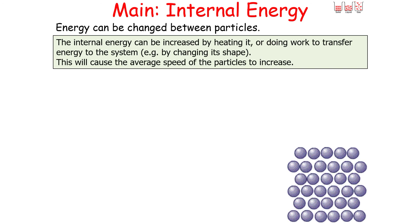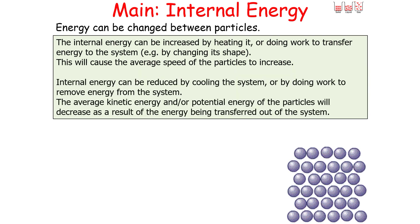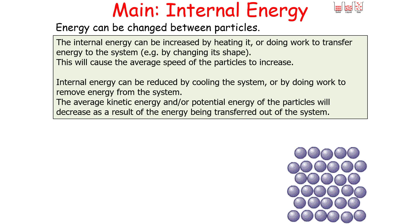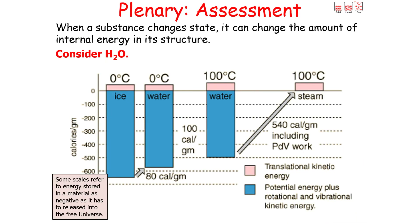Internal energy can also be reduced by cooling the system or by doing work to remove energy from it, causing the average kinetic and/or potential energy of the particles to decrease. For example, when a substance changes state — such as ice, water, and steam — the amount of internal energy in its structure changes. You can see that the internal energy of the substance changes as it changes state.